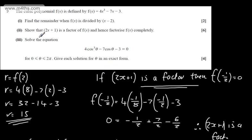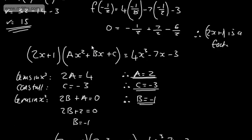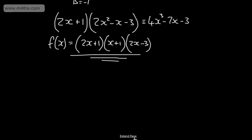In the third part for four marks, we need to solve the equation 4cos cubed theta minus 7cos theta minus 3 equals 0 for theta between 0 and 2 pi. We need to give each solution for theta in an exact form. If we look at this now, we've got that x would equal cos theta. So what we're actually looking at now is f of cos theta equals 0.